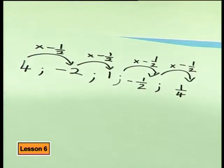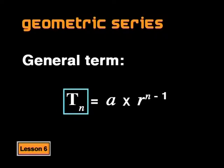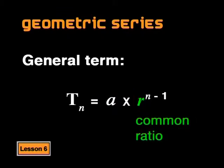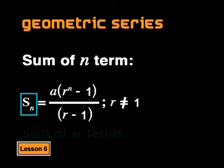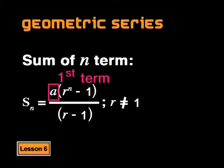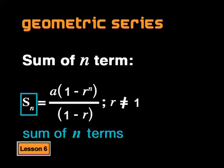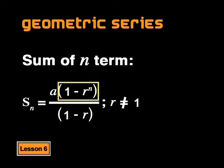We called negative one half the common ratio of the series. We also established that the general term of a geometric sequence is given by the formula t_n equals the first term a multiplied by r to the power of n minus 1, where r is the common ratio. Then we looked at the sum of n terms, given by the formula S_n equals a times (r to the power n minus 1) all divided by (r minus 1).